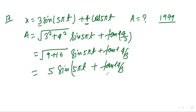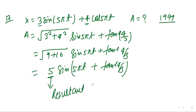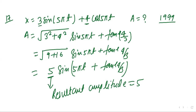This gives the resultant amplitude. The resultant amplitude is equal to 5. That is all we need to find.